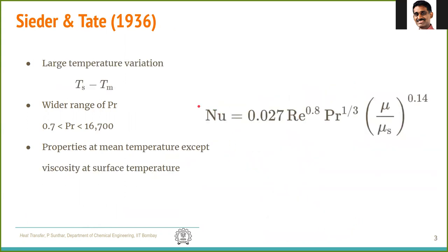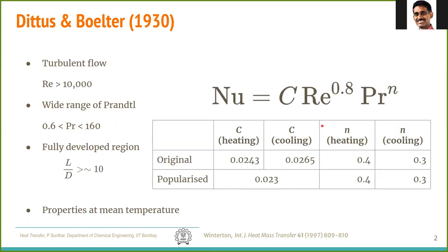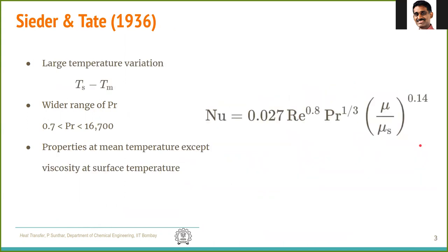The second commonly used equation is called the Sieder-Tate equation. It looks similar to Dittus-Boelter: Re^0.8 and Pr^(1/3) — so the Reynolds exponent is the same 0.8, and the Prandtl exponent is 1/3 instead of 0.3. The pre-factor is also roughly the same.